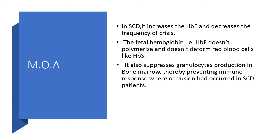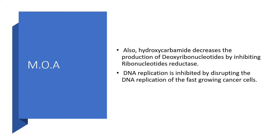Regarding mechanism of action: in sickle cell disease patients, hydroxyurea increases hemoglobin F and decreases the frequency of crisis. Fetal hemoglobin (hemoglobin F) will not polymerize and will not deform red blood cells the way hemoglobin S does. It also suppresses granulocyte production in bone marrow, preventing immune-mediated vascular occlusion. Mechanistically, hydroxycarbamide decreases the production of deoxyribonucleotides by inhibiting ribonucleotide reductase, thereby inhibiting DNA replication in fast-growing cancer cells — which is why it is used as an antineoplastic agent.